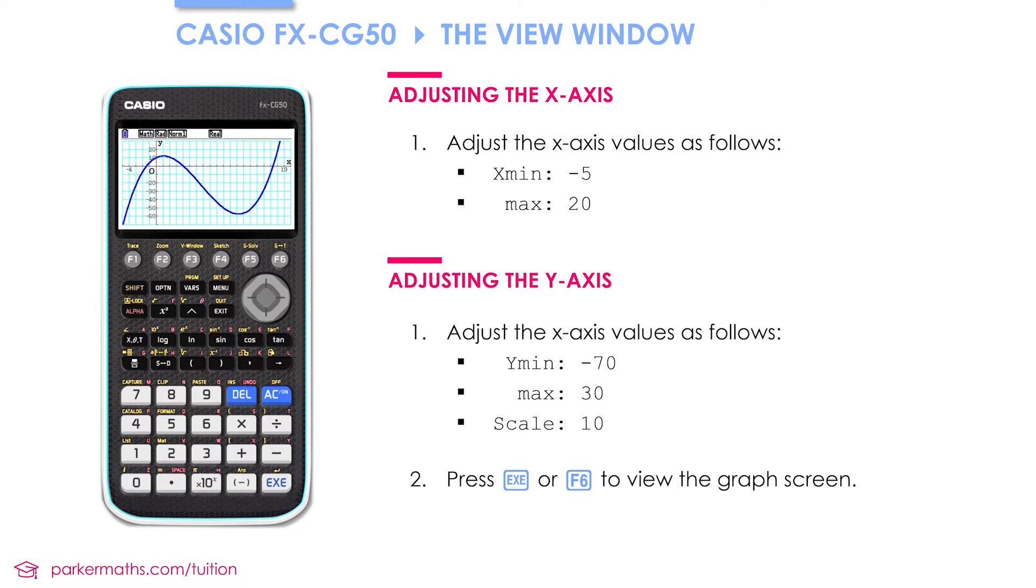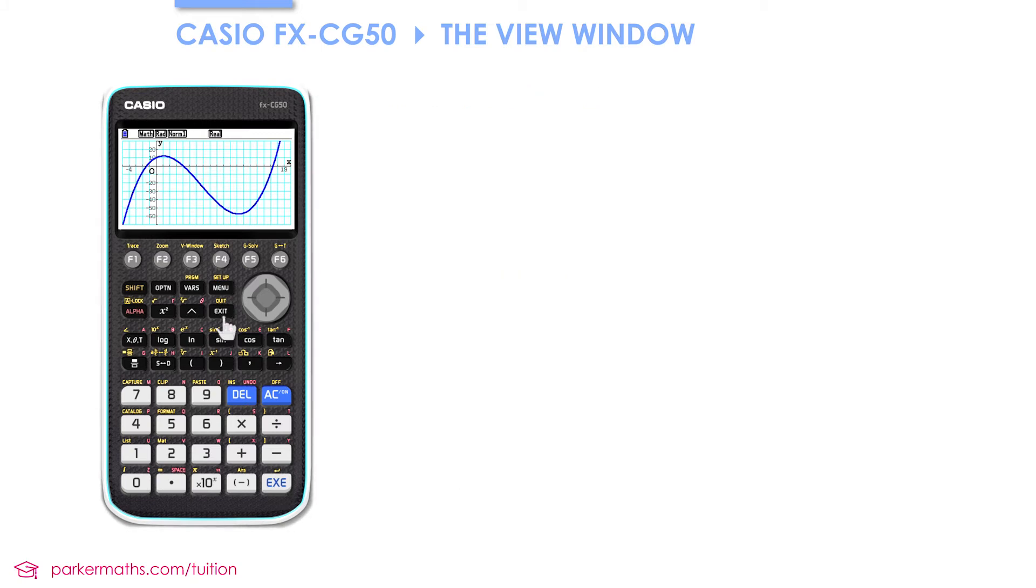Now that we've got a graph nicely fitting on our screen, I'd like to take a look at some of the other helpful functions in the view window. But first of all, I'd just like to show you another way of accessing the view window. If you're in function mode, which I can get to by pressing exit, you can still access the view window without going through the graph window. To do that we have to press shift before we press F3.